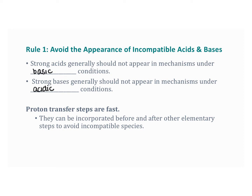Under basic conditions, the equilibrium concentration of really strongly basic species is also very, very small. Proton transfer steps are fast — so fast that they can be incorporated before or after another elementary step as necessary to avoid incompatible species, like a basic species when you know you have an acidic solution. You can gain a sense of how fast proton transfers are by recalling acid-base titrations from general chemistry lab. Changes in pH occur almost instantaneously on addition of an acid or base, whereas many organic reactions require hours to reach completion, even at elevated temperatures.